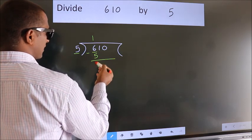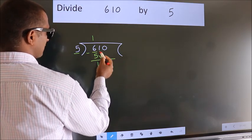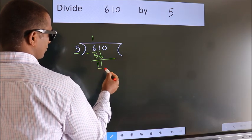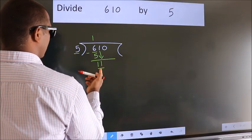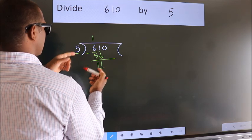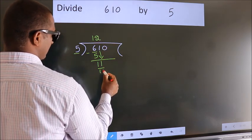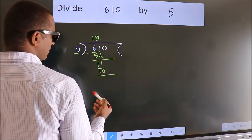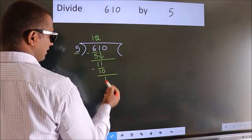After this, bring down the beside number. So, 1 down — so, 11. A number close to 11 in the 5 times table is 5 twos 10. Now we subtract. We get 1.